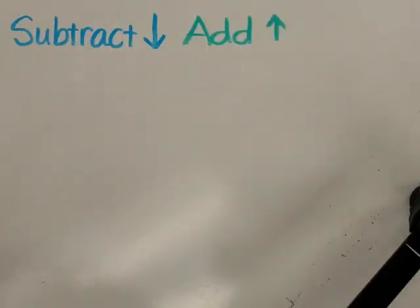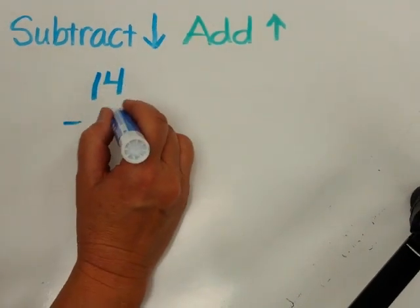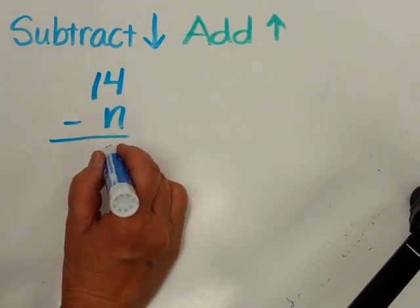Today's math lesson is Missing Numbers in Subtraction. As we look at missing numbers in subtraction, I want you to think subtract down, add up. For example, if the math problem were 14 take away missing number equals 6.